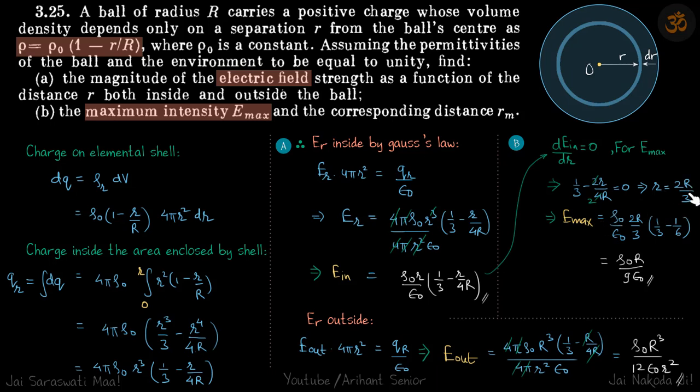So if you put this 2R by 3 here, you will get the value of E max which is rho naught R by 9 epsilon naught which is our answer.